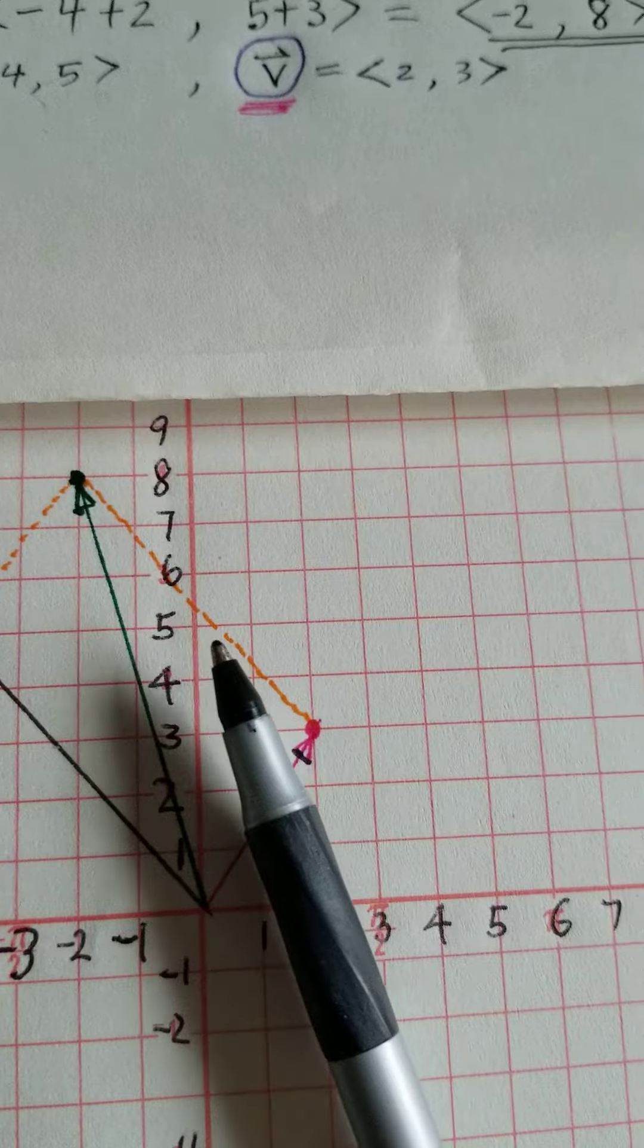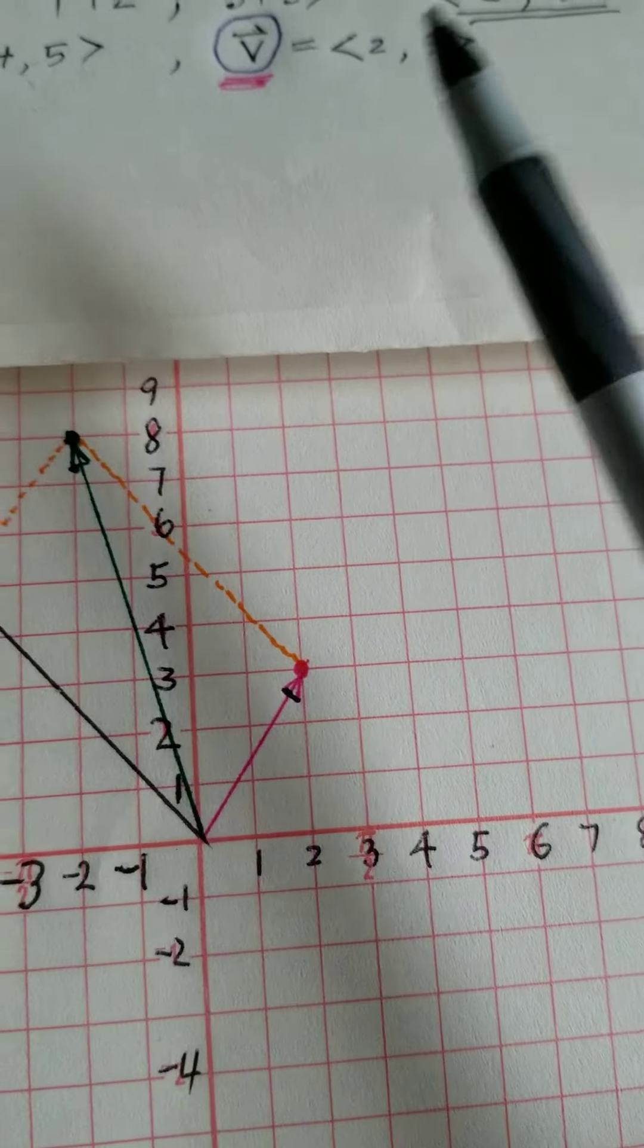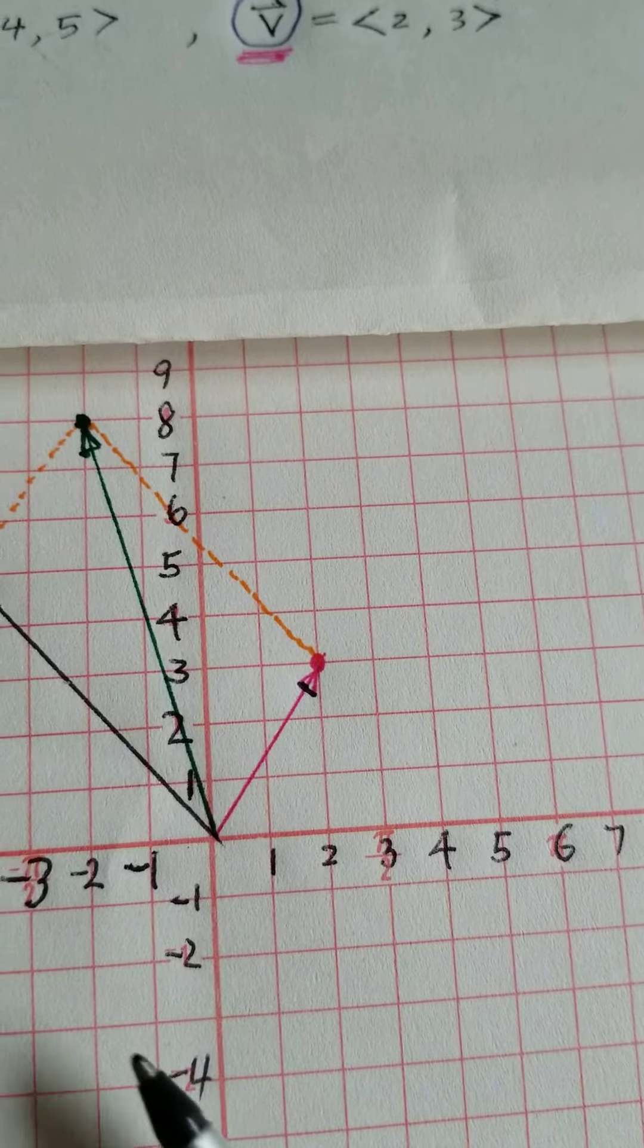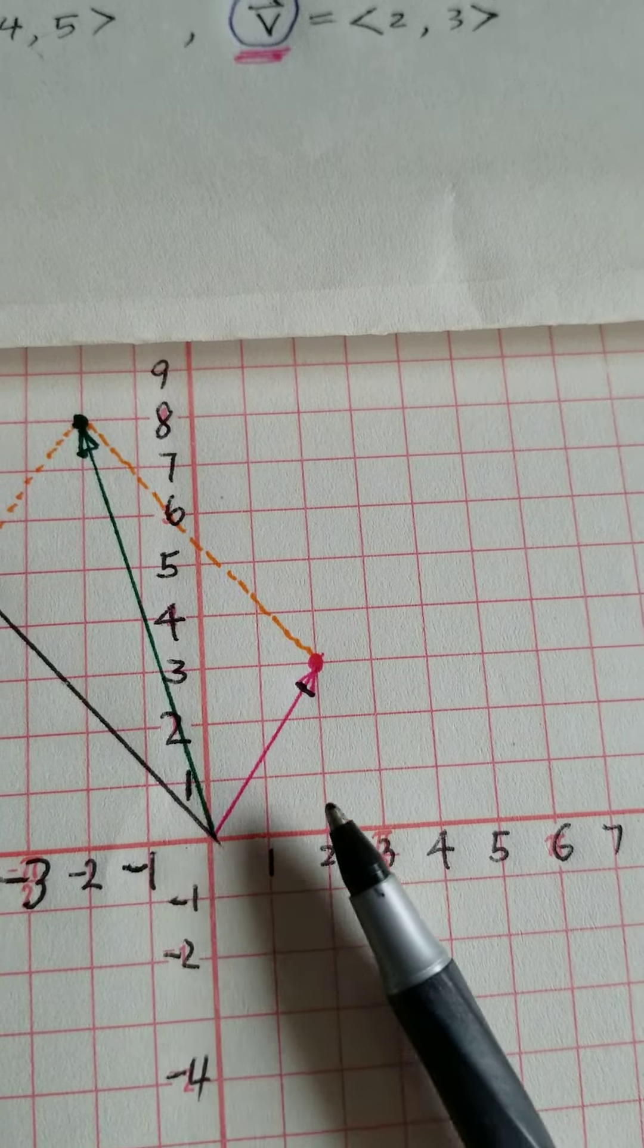The v is the pink, right, 2 and 3. So we go 2 then up 3.